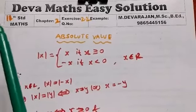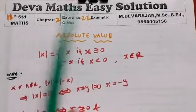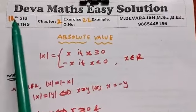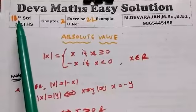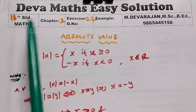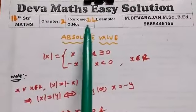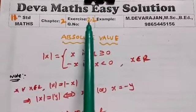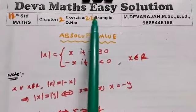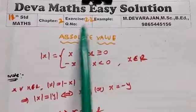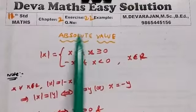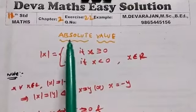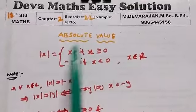Hi everyone, this is Deva from the AppMass solution. You are going to see Launcher Mach Chapter 2, section 2.2: Introduction to the Absolute Value.